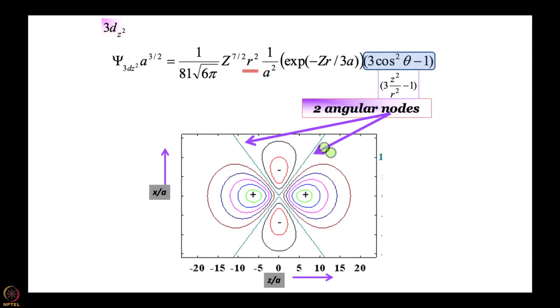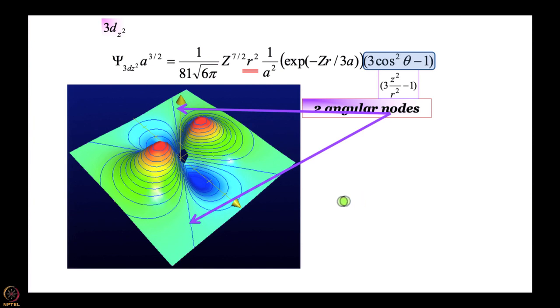So these are the 2 angular nodes. Remember these are the 2 angular nodes - theta equal to 54.7 degrees and theta equal to 180 minus 54.7 degrees. Please do not think that this is one angular node straight line, this is another angular node straight line - they are not. They are actually 2 funnel-shaped angular nodes. And now since theta is 54.7 degrees, this angular space available is smaller, that is why this slope is larger, this slope is smaller, and every time you cross a node, sign has to change. So this is 3d z square.